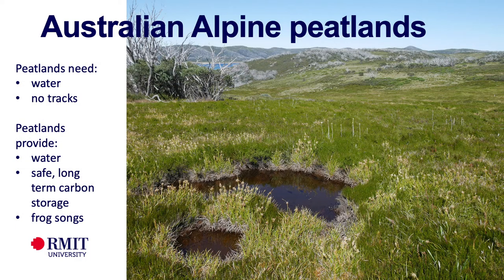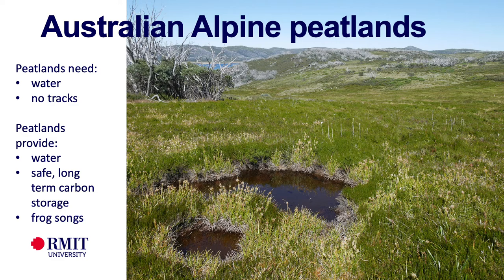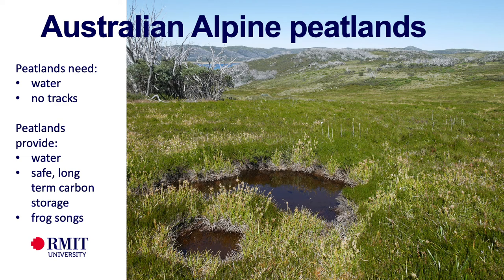Peatlands need water — they need to be wet. They are a type of wetland where peat soil builds up. To enable the balance between carbon fixed through photosynthesis and carbon returned to the atmosphere by microbial respiration, water hinders the breakdown of plant material. Peatlands need to stay wet to exist and also need to be free of tracks, drains, roads, or physical disturbance. In return, peatlands provide water.